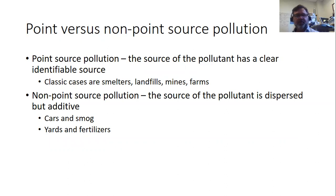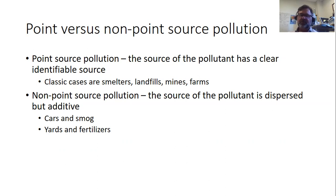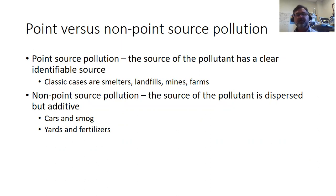In the pollution literature, you'll see point versus non-point source pollution. Point source is a producer of pollution that has a clear, identifiable source — you can point to that one thing causing the pollution. Classic cases are smelters, which are factories that concentrate minerals and metals. Landfills, mines, and farms are also point sources.